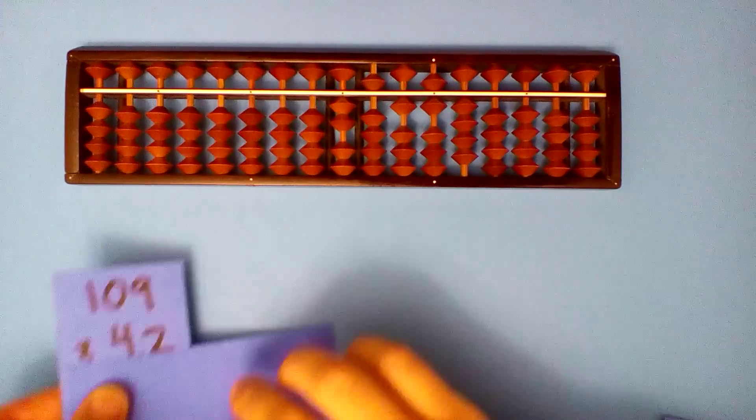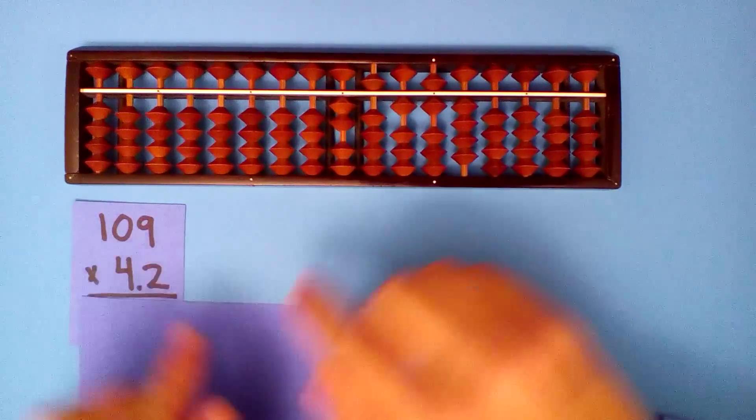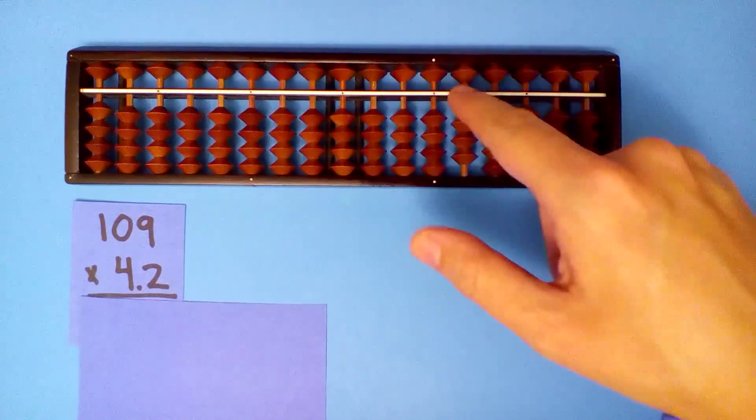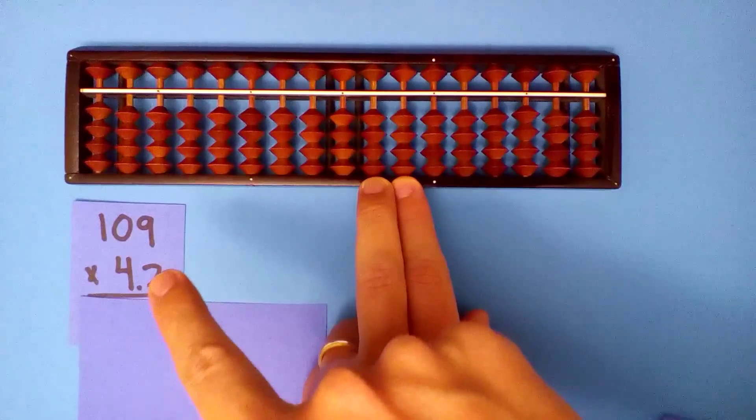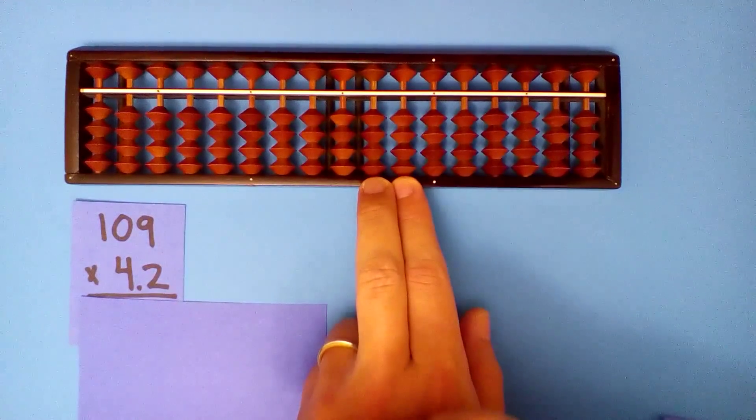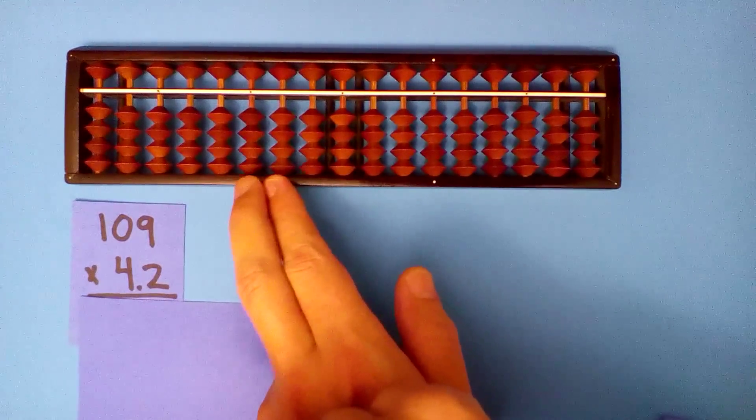What is 109 times 4.2? Start on the tenths and hundredths. Three digits here and one more make four. So we go one, two, three, four.